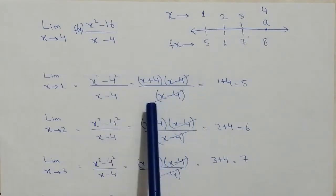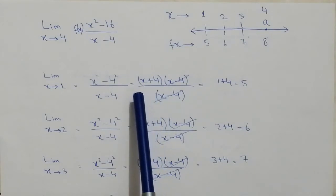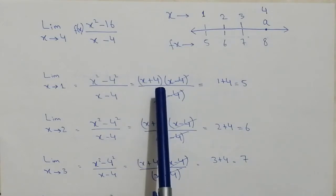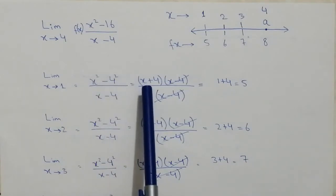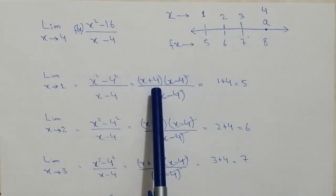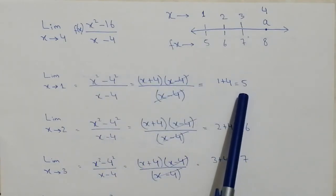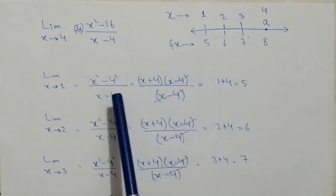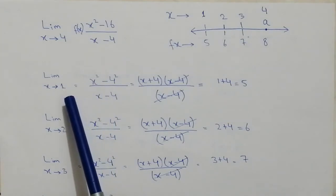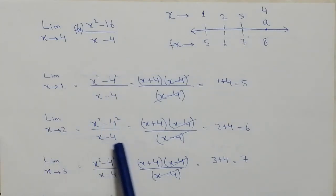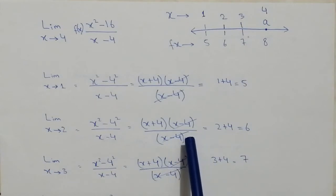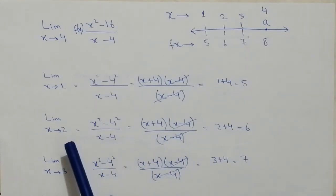So x minus 4 and x minus 4 will be cancelled. So we get x plus 4, and we will apply the limit. If the limit is 1, then 1 plus 4 will be 5. And if we put the limit as 2, after solving we will come to know that applying the limit x approaches to 2, the f of x will be equal to 6.